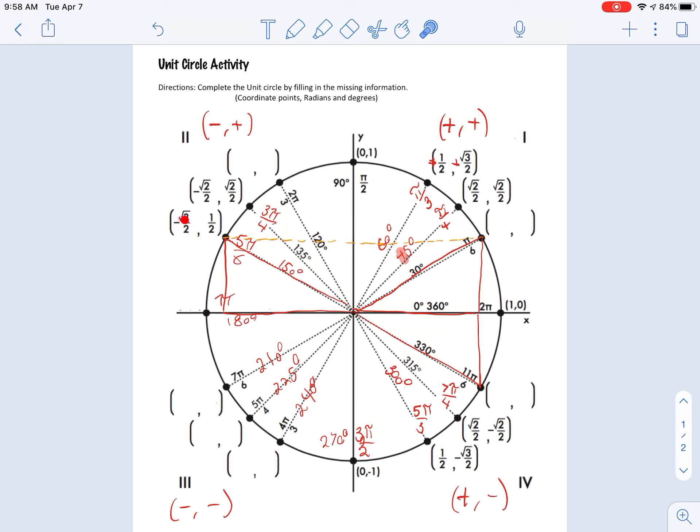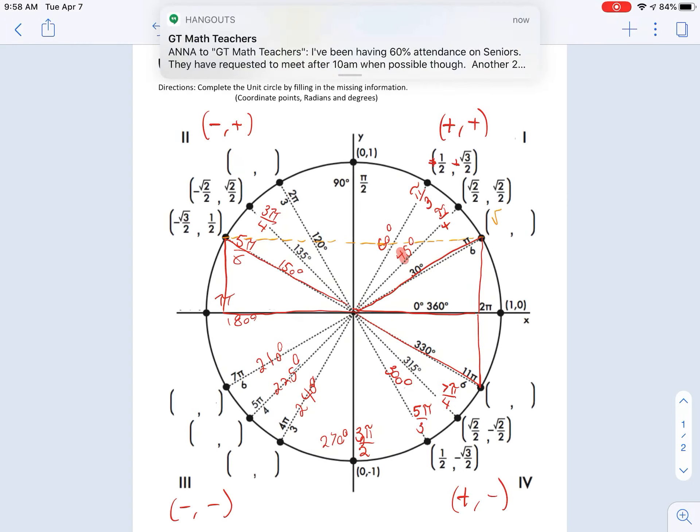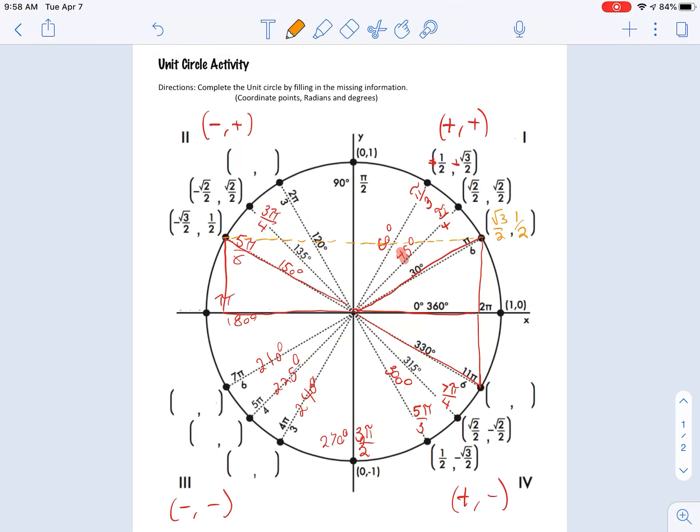So instead of having negative root 3 over 2 and 1 half, we're going to have positive root 3 over 2 and 1 half. Positive root 3 over 2 and 1 half. So what we're going to do is take the same sort of idea and roll that out into the third quadrant.